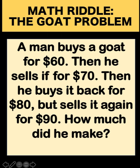A man buys a goat for $60, then he sells it for $70, then he buys it again for $80, and sells it again for $90. How much did he make? You can pause the video and see if you can analyze this math riddle.